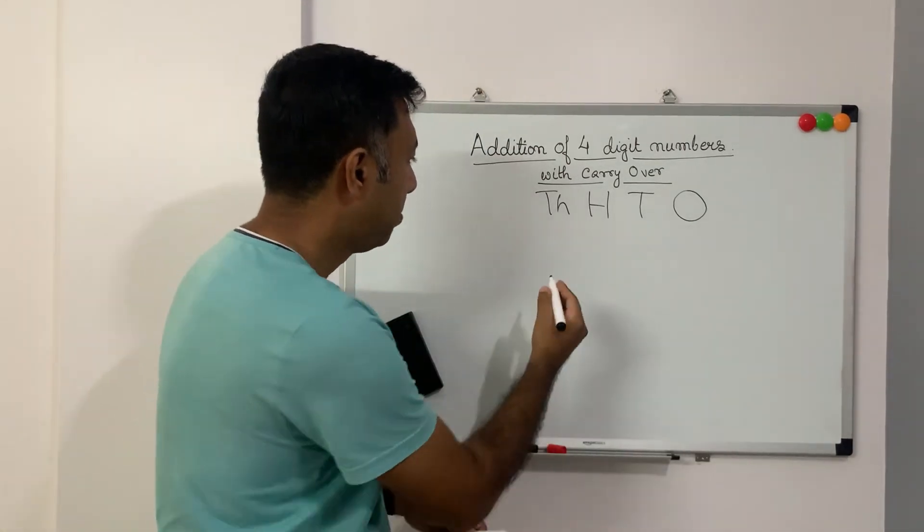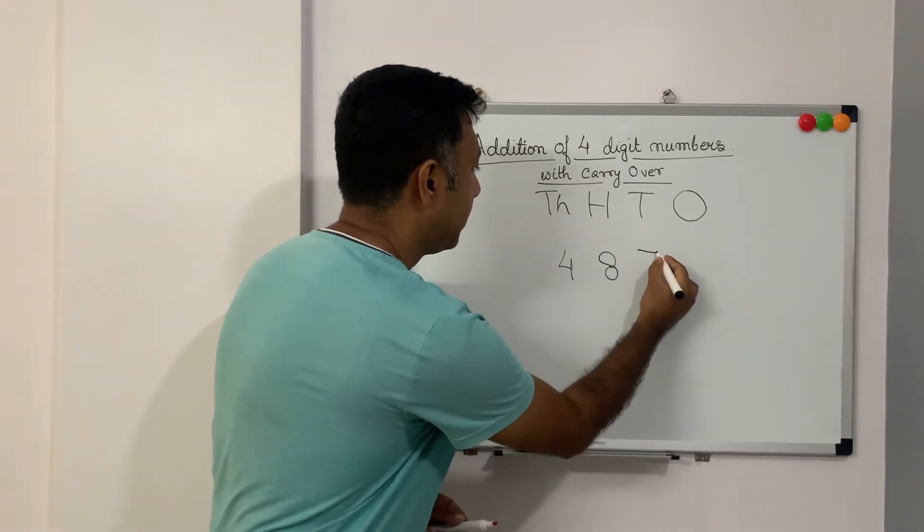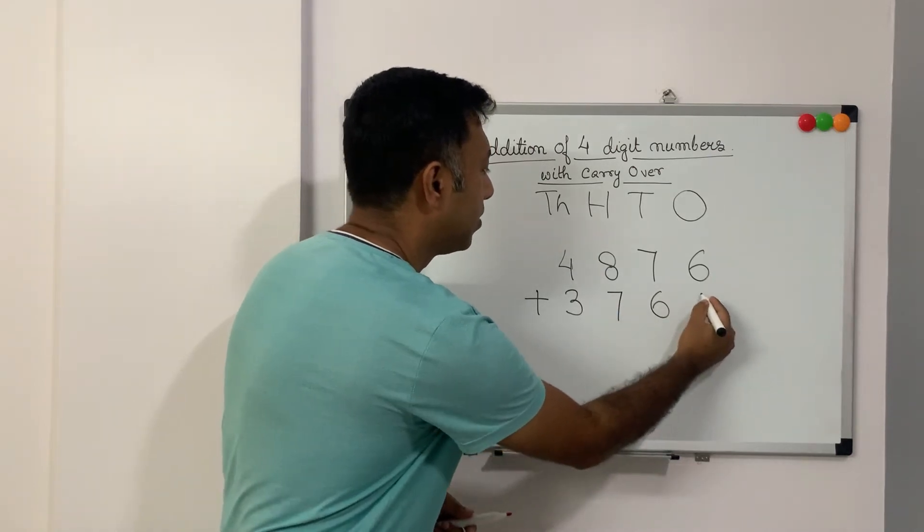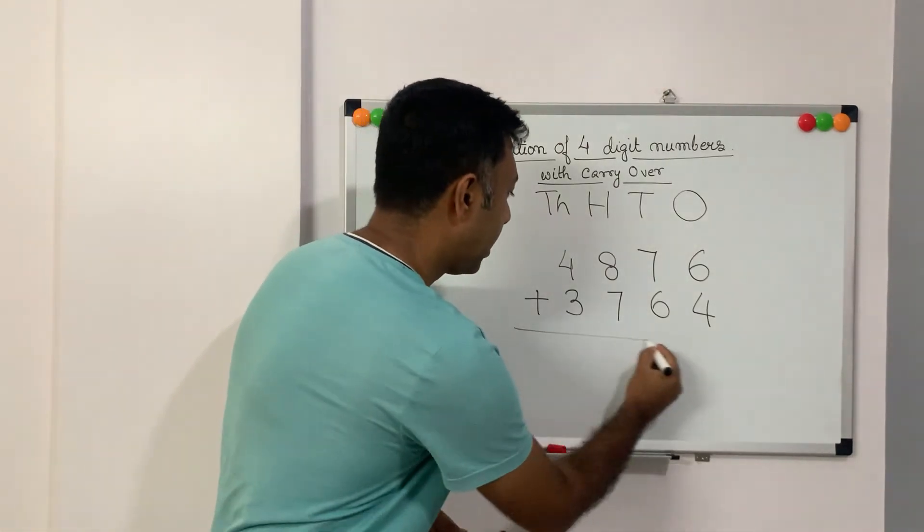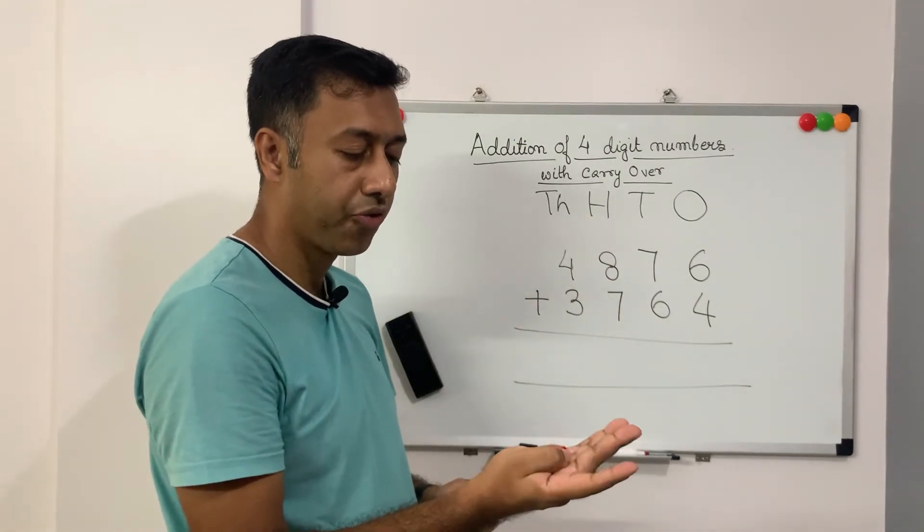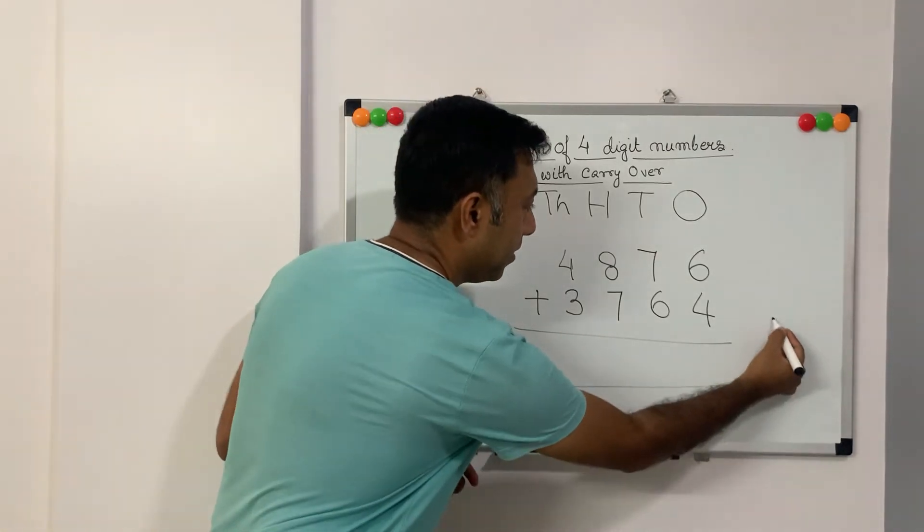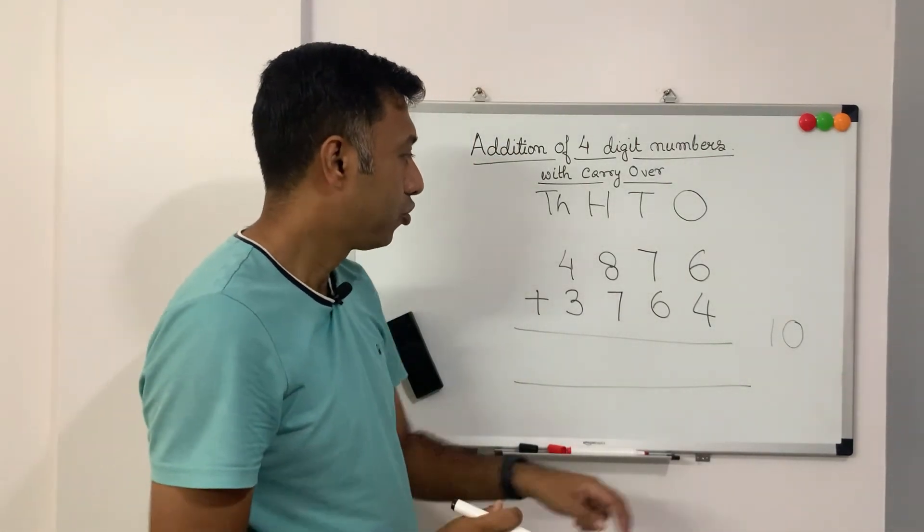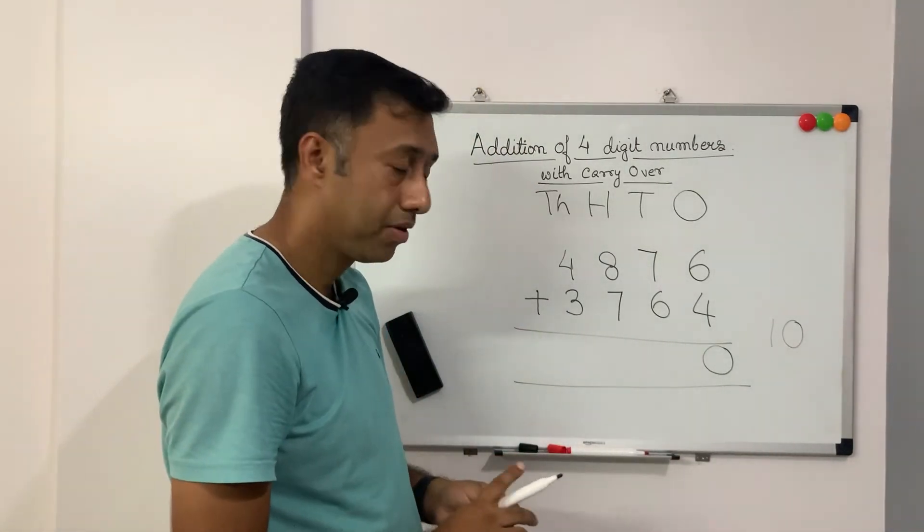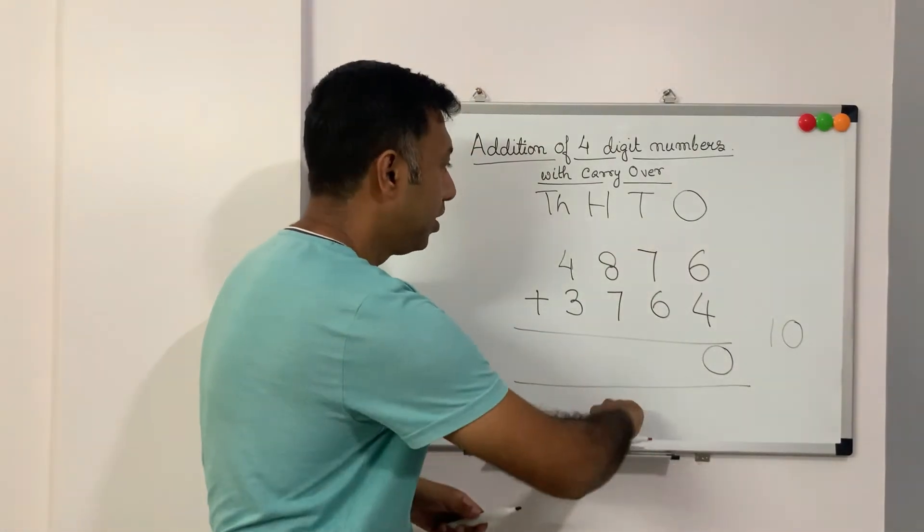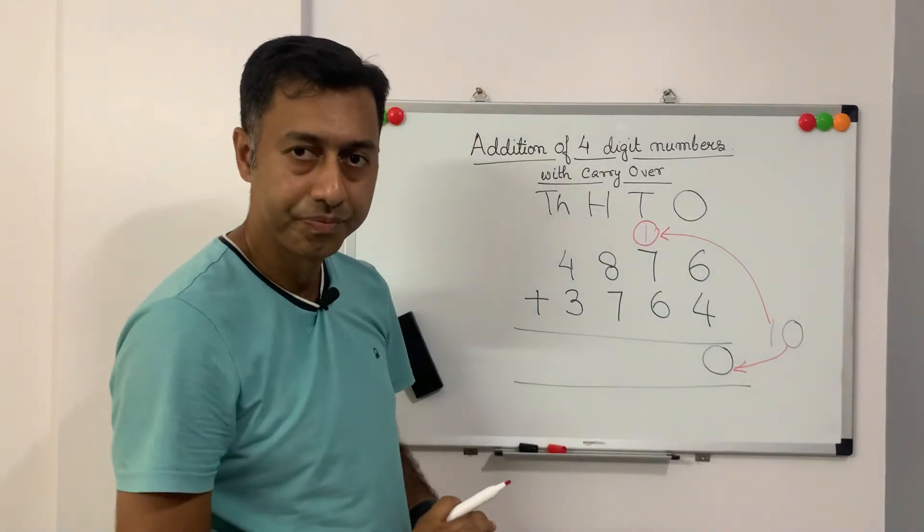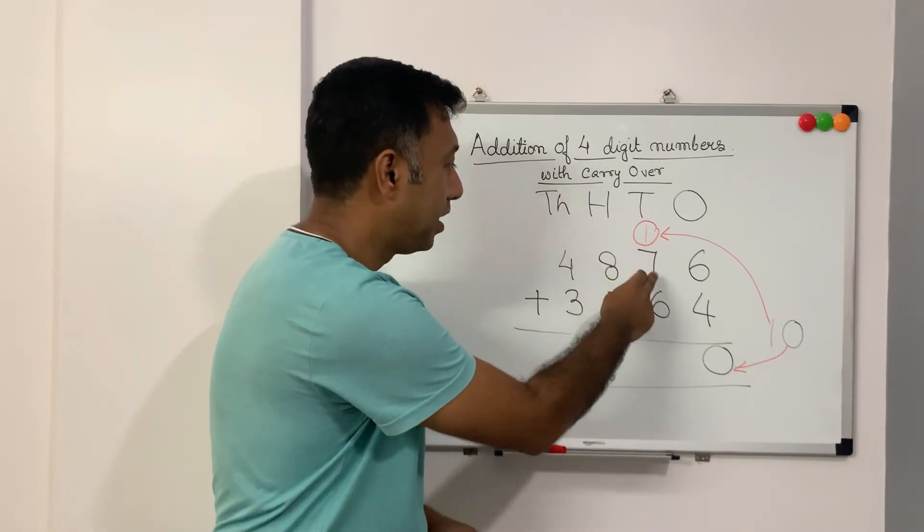This time our numbers are 4876 plus 3764. Let us try to add these two numbers now. What is 6 plus 4? It is 10. So 10. How do we write it? So the 0 will come here. And the 1. What happens to the 1? The 1 is carried over to the next house. This is the 1. And the 0 comes here. The 1 comes here.